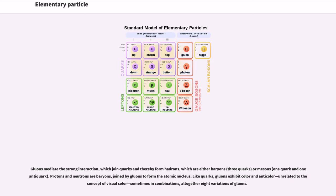Gluons mediate the strong interaction, which joins quarks and thereby forms hadrons, which are either baryons (3 quarks) or mesons (1 quark and 1 antiquark). Protons and neutrons are baryons, joined by gluons to form the atomic nucleus. Like quarks, gluons exhibit color and anticolor, unrelated to the concept of visual color, sometimes in combinations, altogether 8 variations of gluons.